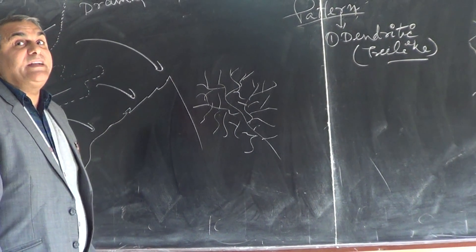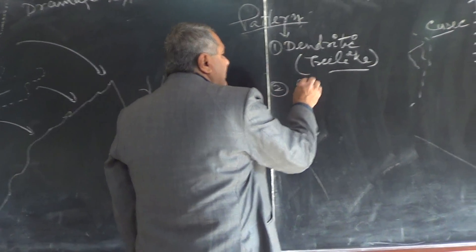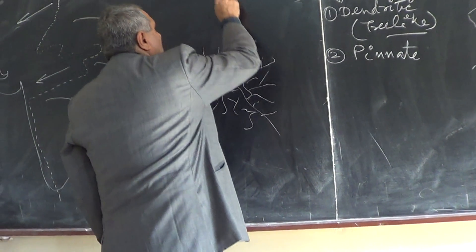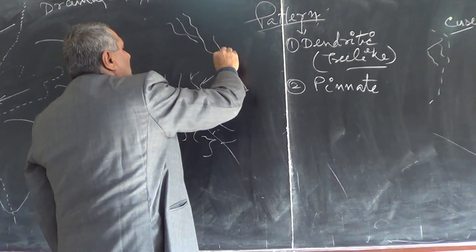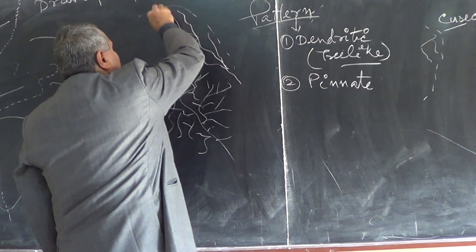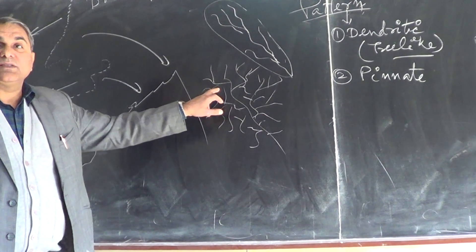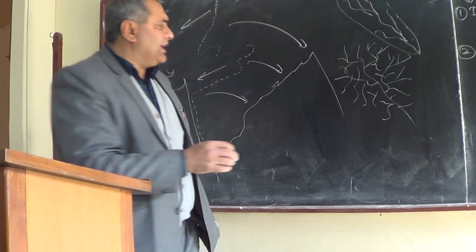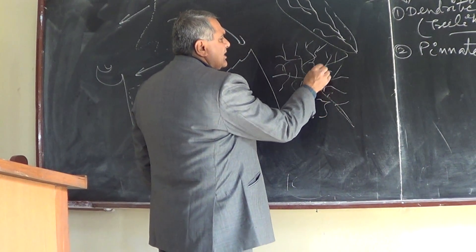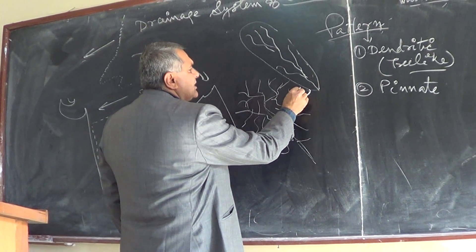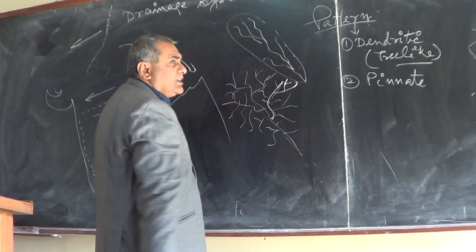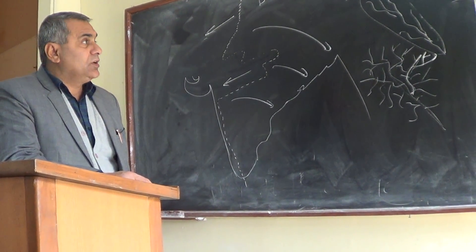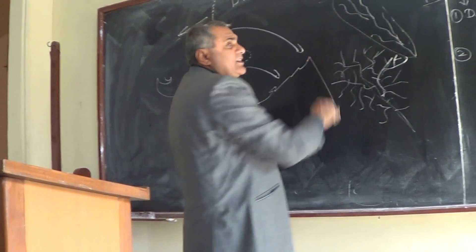This tree-like pattern is called the dendritic pattern. Another pattern is called the pinnate pattern. A pinnate drainage has only two main branches — one branch on each side. It is a leaf-type pattern, with a sequence of channels: main channel, second channel, third, fourth, and fifth. We calculate the density and frequency of drainage from this sequence.